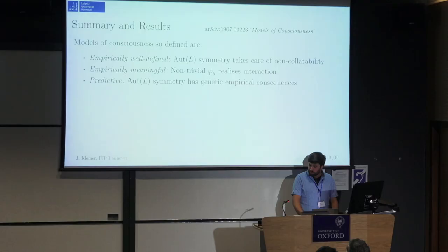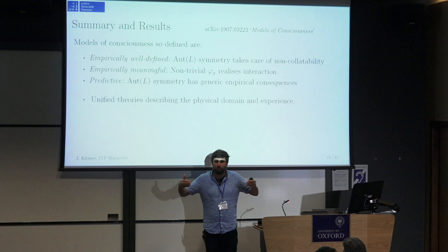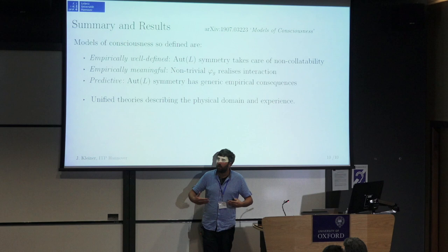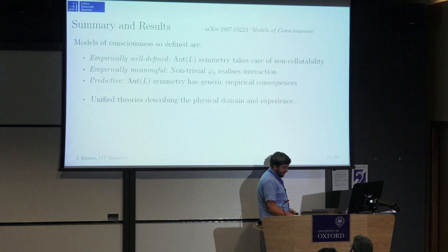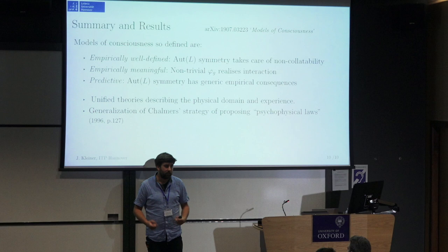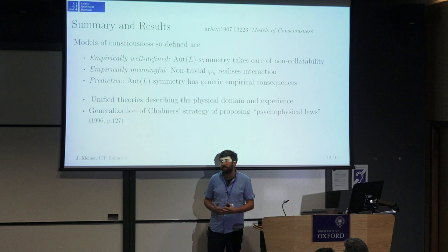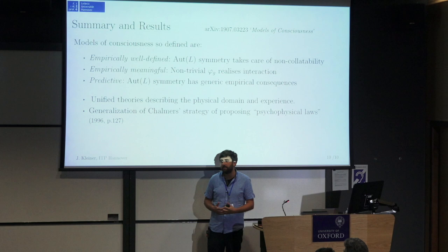Wrap up: the upshot is that this definition of model of consciousness is really less a definition of having laws that bridge two domains, but more a definition of having a unified theory — just as we have in other domains of physics — between the physical domain and experience. The last thing: this is a generalization of Chalmers' strategy of proposing psychophysical laws in three ways. First, it's not laws, it's a theory — theories are always more general. Second, it avoids some assumptions he has to make, for example related to the closure of the physical — this is compatible with closure or non-closure. Third, it is built on a true explanatory gap, and not on an artifact of using a too-small notion of explanation. Thanks very much for your attention.